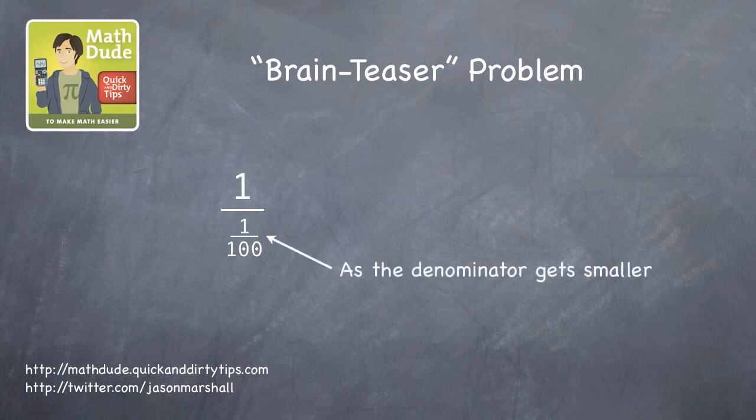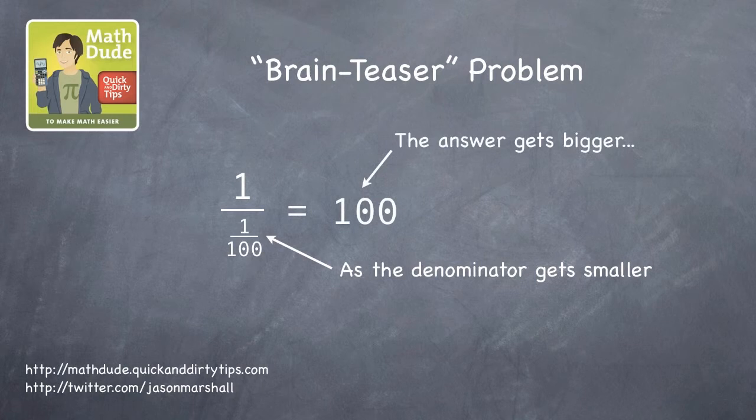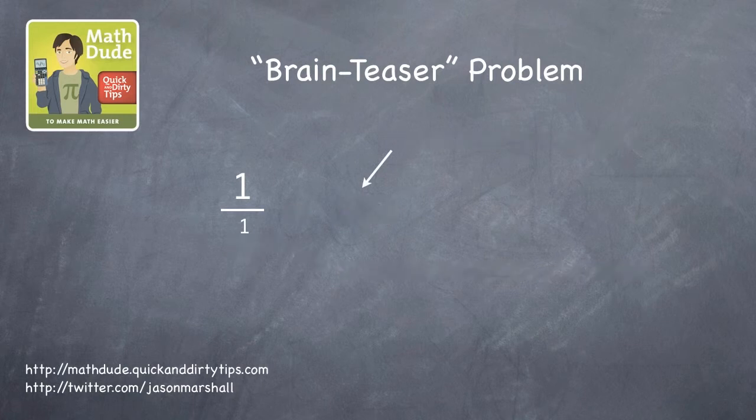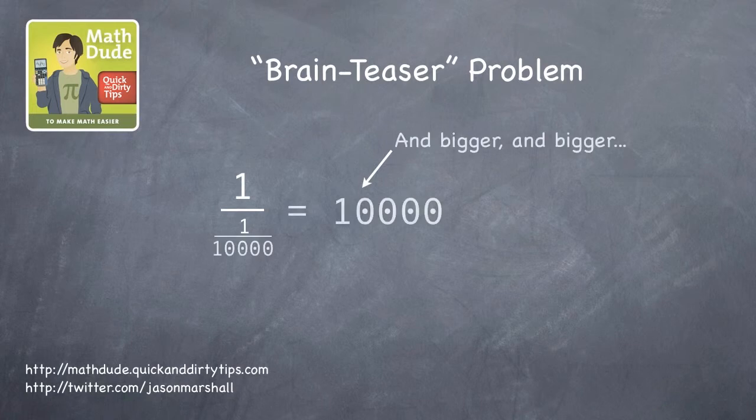The point is that as the bottom number, the denominator, gets smaller, the answer to 1 over that smaller and smaller number gets bigger. And bigger. And bigger. And believe it or not, even bigger.